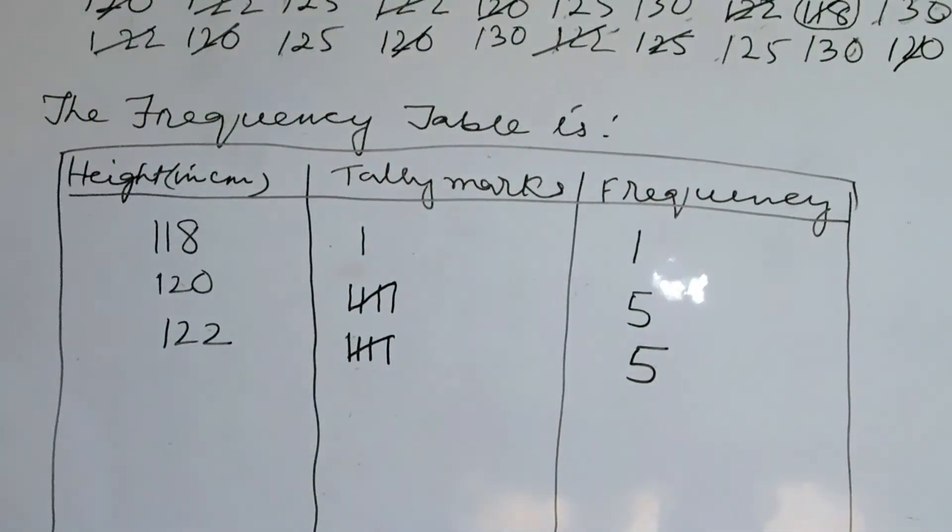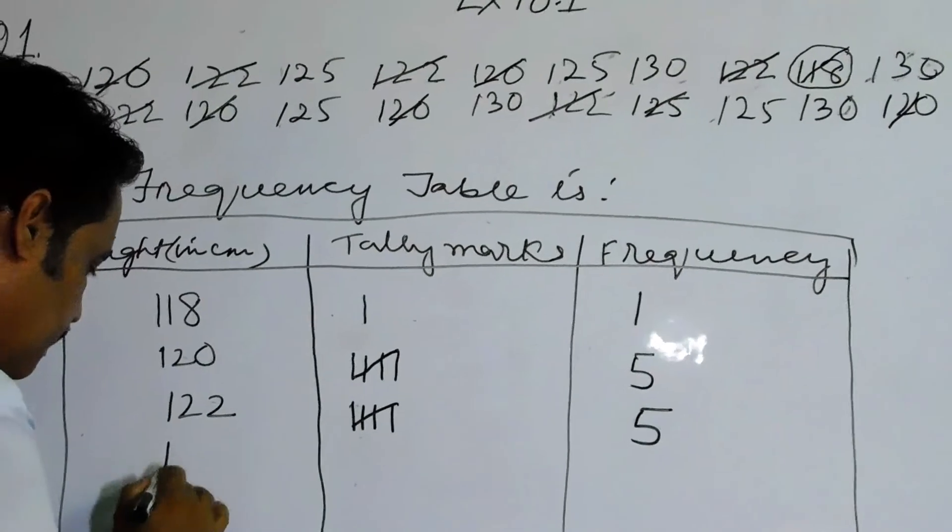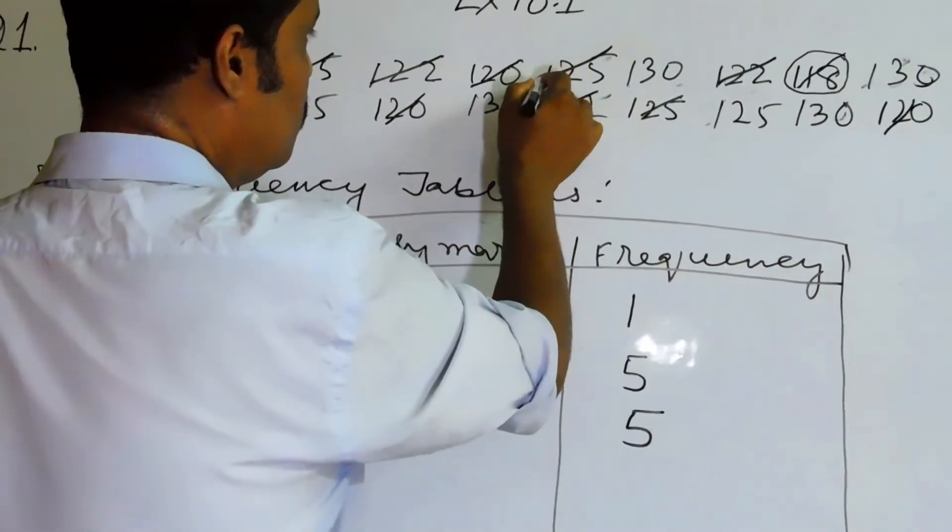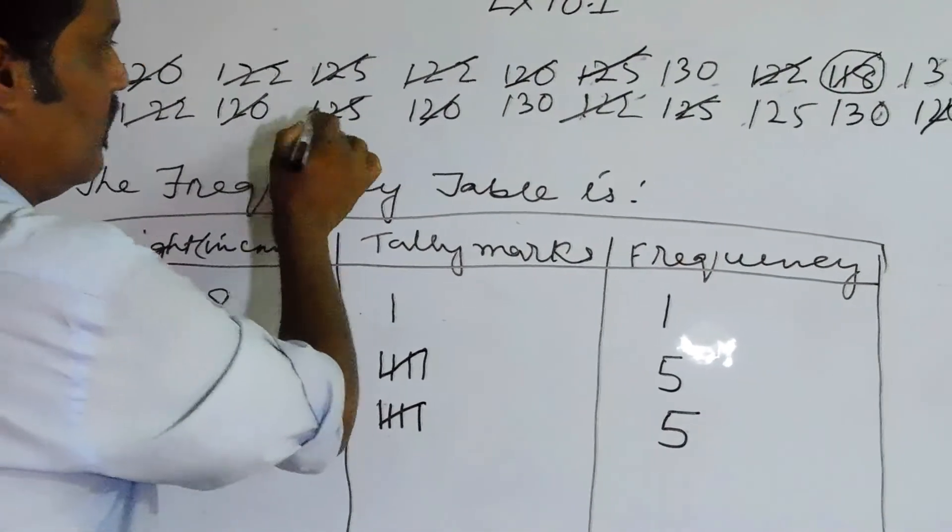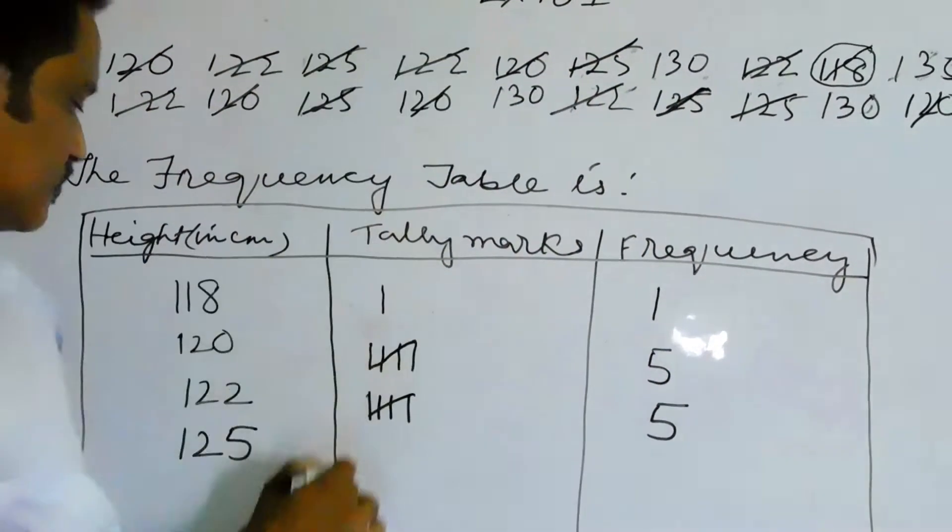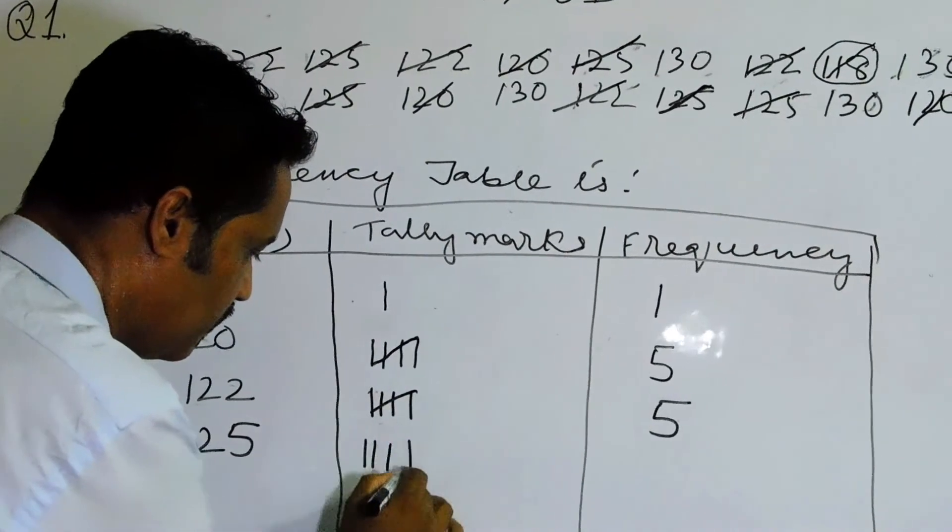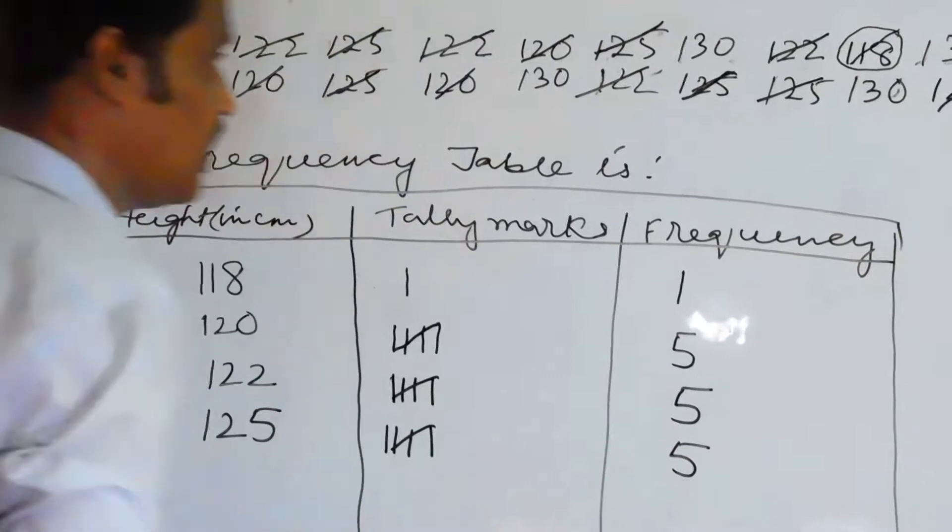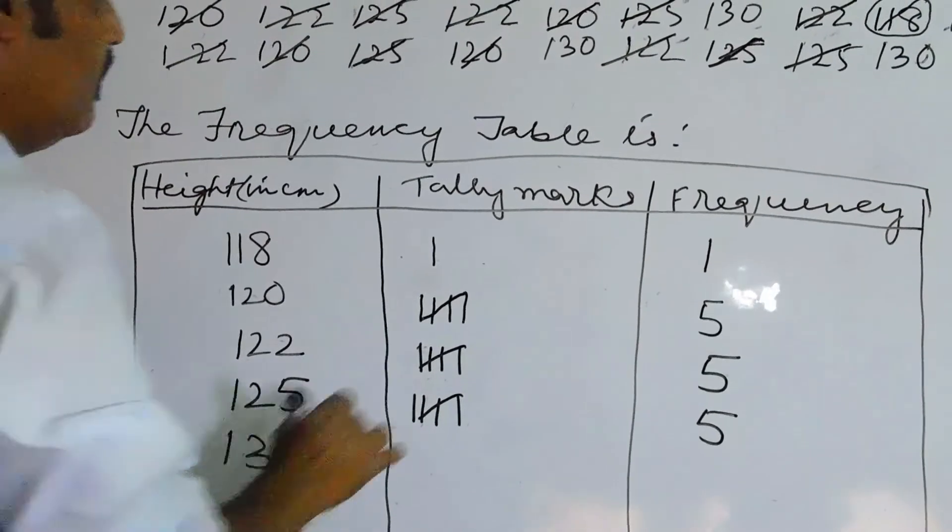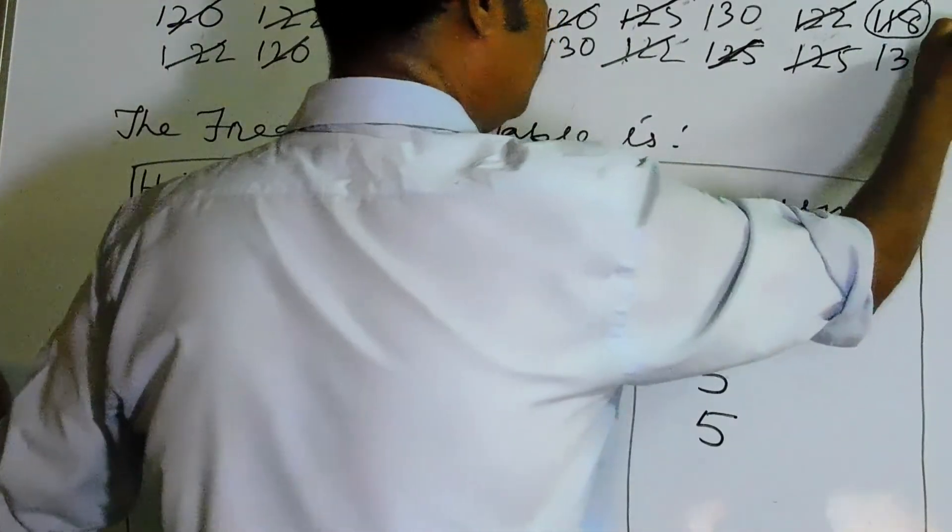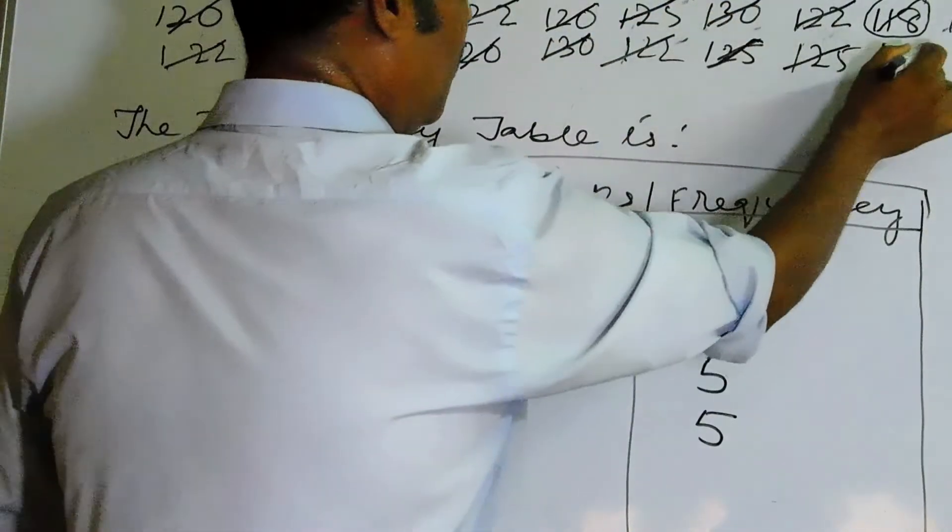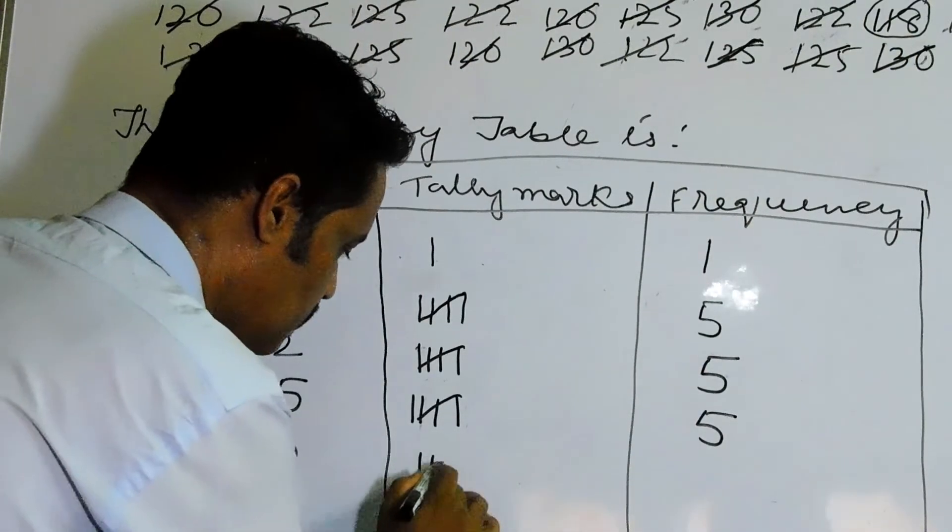Then coming to the next number 125. 125, one two three four five. So write five here. Then coming to the next number 130. 130, one two three four. So four. Next number 132, one two three four. So children if you look at the data on top all the data are strike out, that means we have written down all the data in that frequency table.